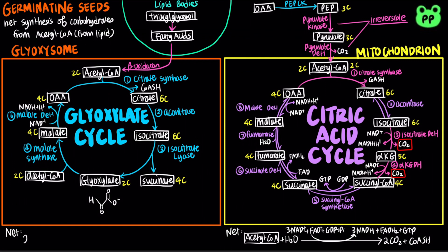Therefore, the net reaction of glyoxylate cycle involves the conversion of two acetyl-CoA to succinate, producing only one NADH molecule.